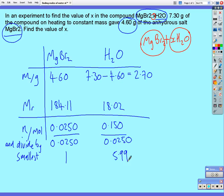That gives us a ratio of 1 to about 5.99. Of course, the value of x must be a whole number, or an integer. So, we can see that the value of x must be 6. So, there are 6 molecules of water for each magnesium bromide unit.